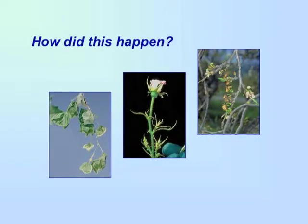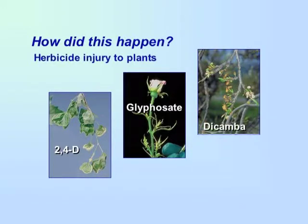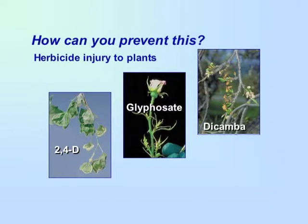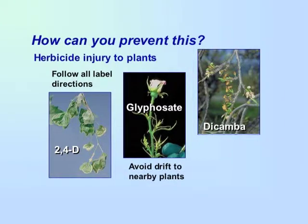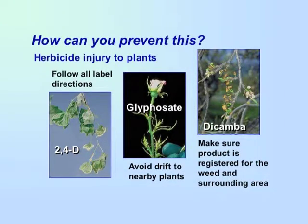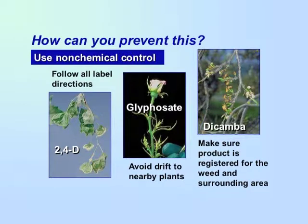How did this happen? This is herbicide injury. How can you prevent this? Follow all label directions. Avoid drift to nearby plants. And make sure the product is registered for the weed and safe to use in the surrounding area. Injury can be avoided by using non-chemical control. Use herbicides as a last resort.